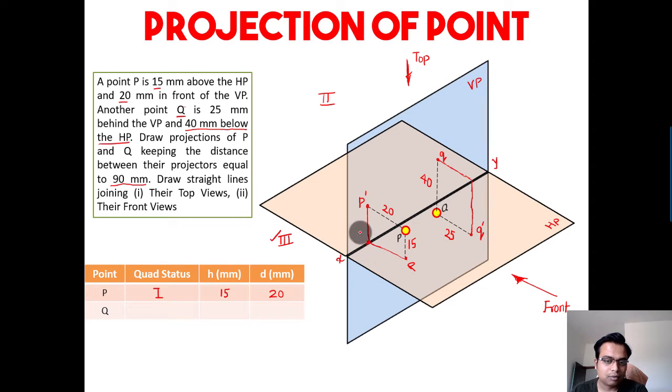Let's say this is one, let's say this is two. So this distance from one to two has to be taken as 90 millimeters. The distance between projectors for point P and for point Q has to be taken as 90 millimeters.